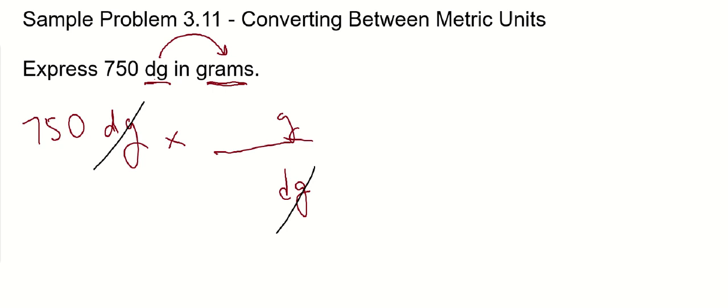Now, you can't just do this and not put the appropriate numbers there because what you put in here has to make this conversion factor equal. And by doing that, you're essentially just multiplying by one. Anything times one is itself.